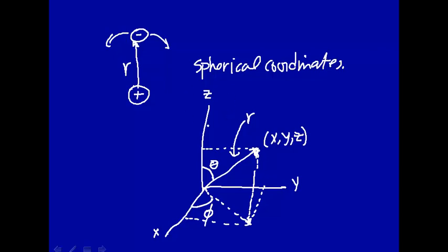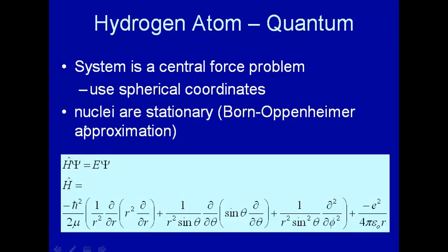So that's how you specify a point in space using spherical coordinates r, theta, and phi. Distance from the origin, angle with respect to the z-axis, and then angle with respect to the x-axis going around the z-axis. So that's how we're going to do spherical coordinates.